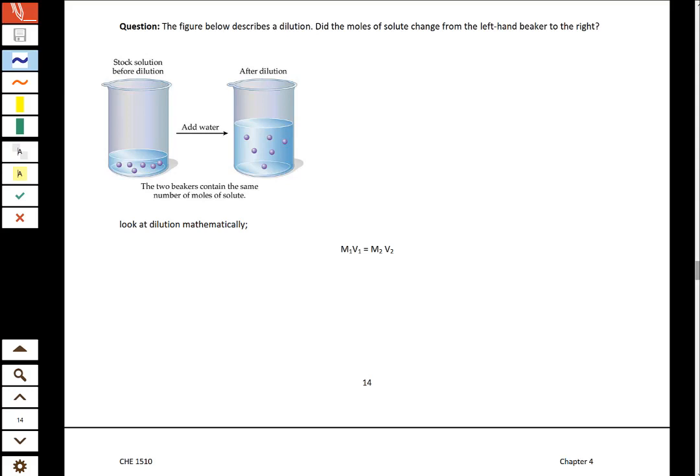So what dilution is, is adding water to a solution that's already been created. So if we look at the solution in here in this first beaker, notice how there are six molecules in there. And over here if we count, there are also six molecules. So these two beakers contain the same number of solute molecules. What ended up changing was the volume of water. So this is what a dilution looks like.